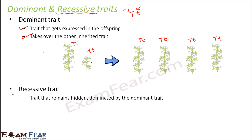Now what about recessive trait? The trait which gets dominated by the dominant trait is the recessive trait — it remains hidden, dominated by the dominant trait. Here, small t is the recessive trait. Does it remain hidden forever? No. It remains hidden only for the F1 generation, but later it gets expressed. Even in F2 generation, not all were dwarf — only 25% were dwarf. Whenever it is heterozygous, it gets dominated. It gets expressed only when both alleles are recessive.